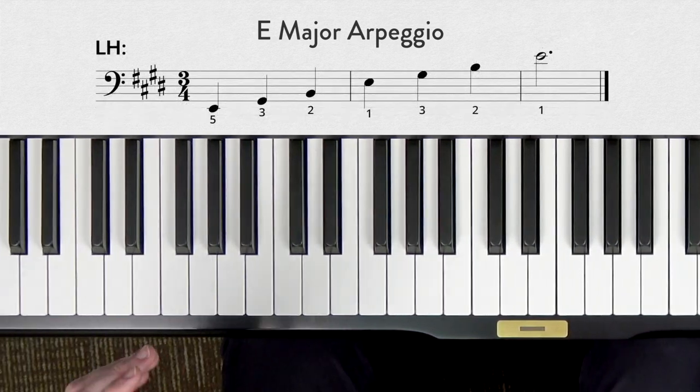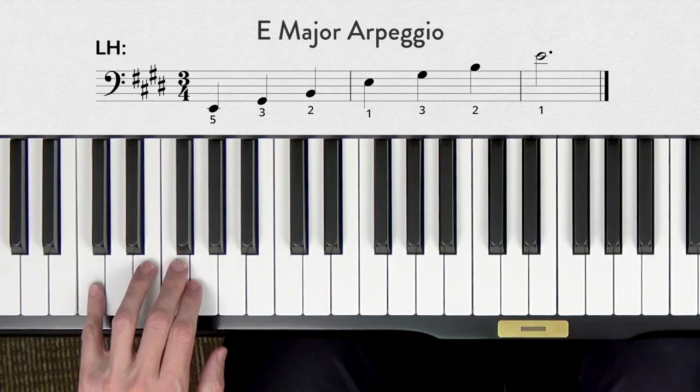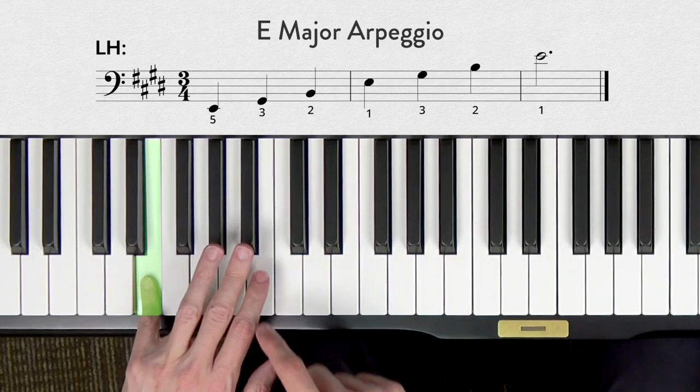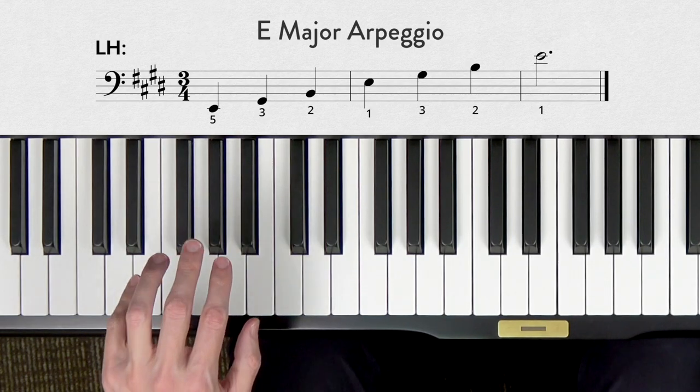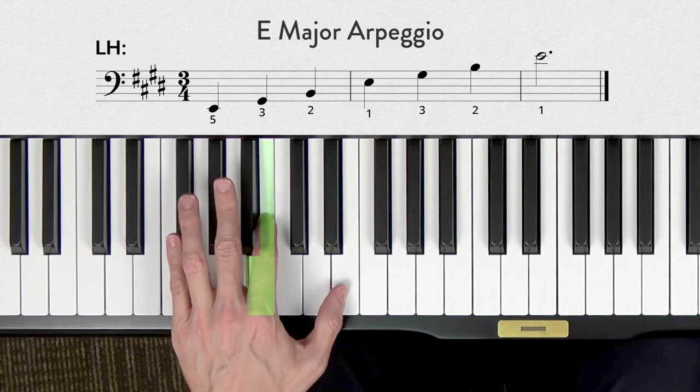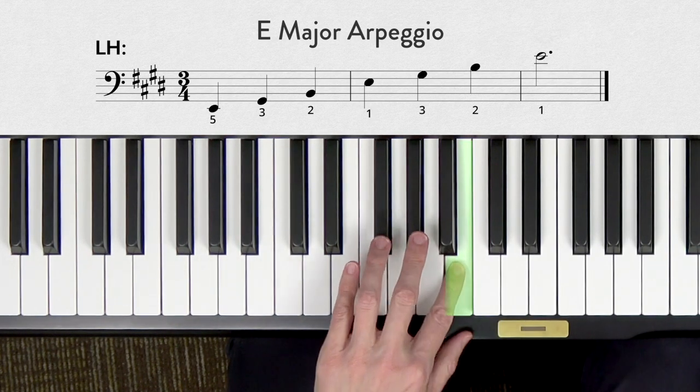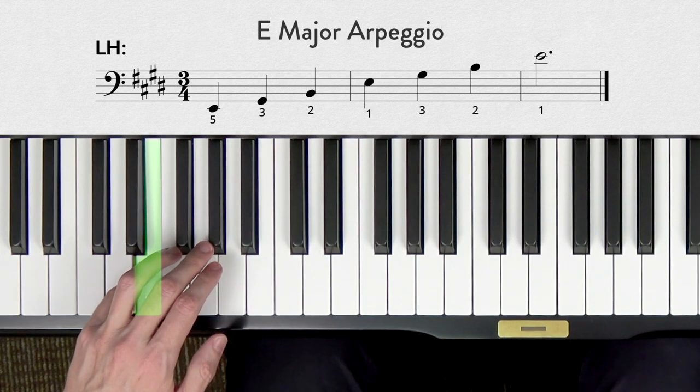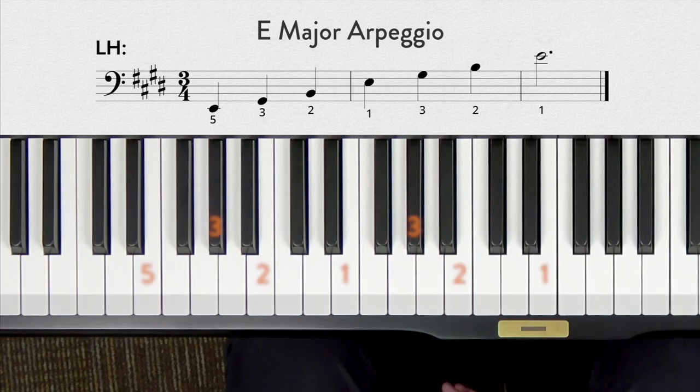Now the left hand does not use the basic fingering. Our basic fingering, remember, is 5 4 2 1. But in E major, because we have that sharp, a 4 is a bit awkward of a stretch. So we're going to use a 3 this time. 5 3 2 1 3 2 1 2 3 1 2 3 1 2 3 5. Pause to work on your left hand E major arpeggio, then press play to go on.